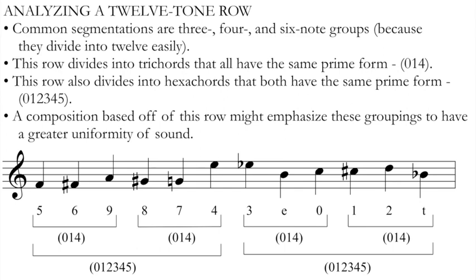That way I could have similar motivic or harmonic ideas showing up over and over again in my music, giving some unity. Alternately, if I wanted something different, I might emphasize a different number of pitches — the 4-note groups in this row are all different, or other combinations like 5 notes or different groupings of 2 and 3. So how a row can break down into smaller units can often determine its possibilities in a piece of music. Again, this is one way to look at a row — there are many ways to analyze rows — but I think this is often a useful starting point when analyzing a 12-tone row.